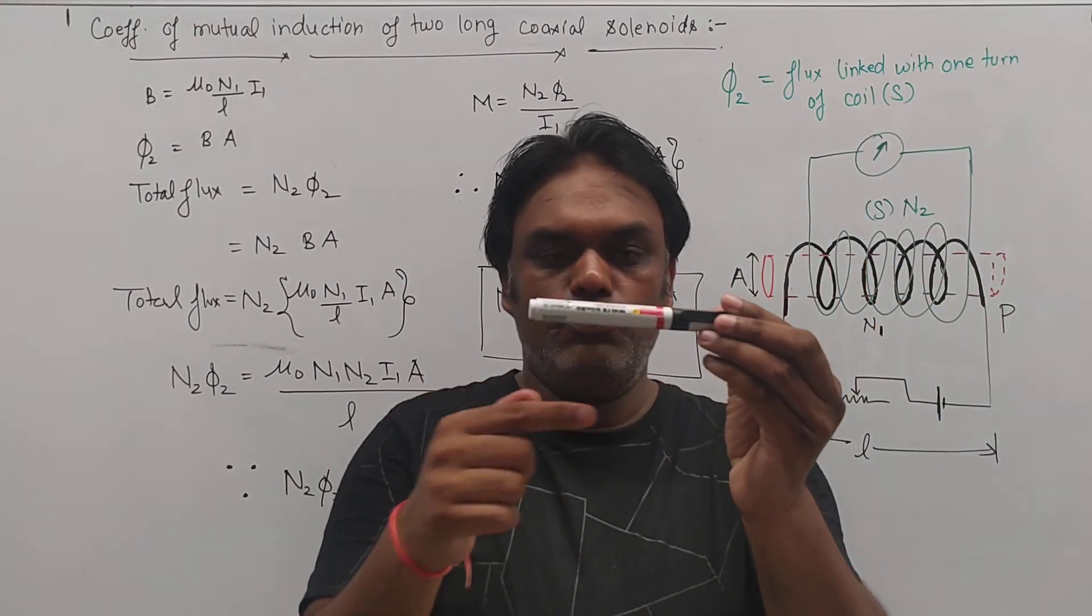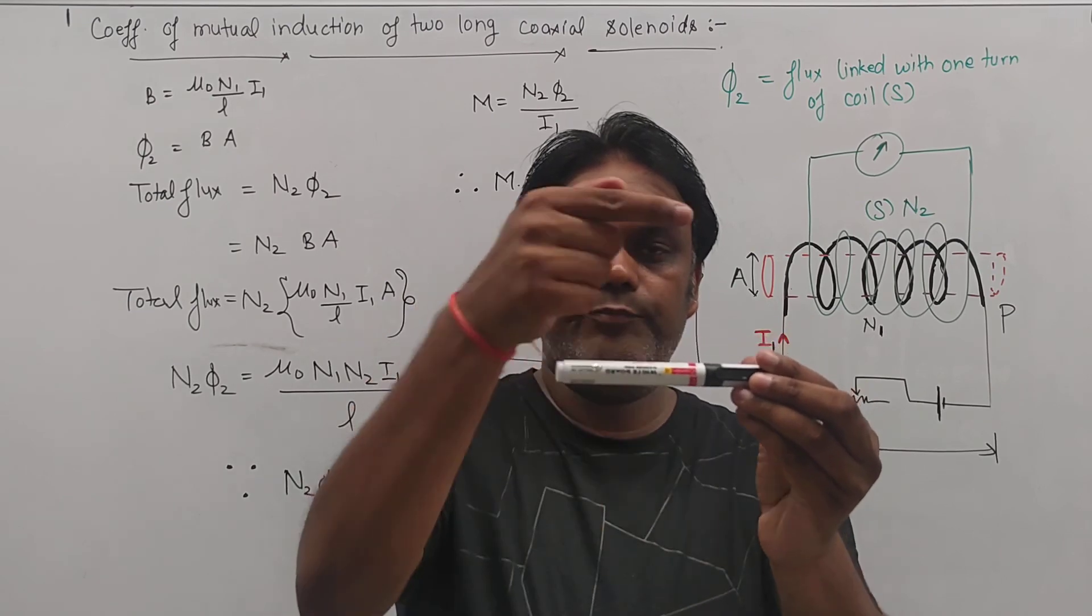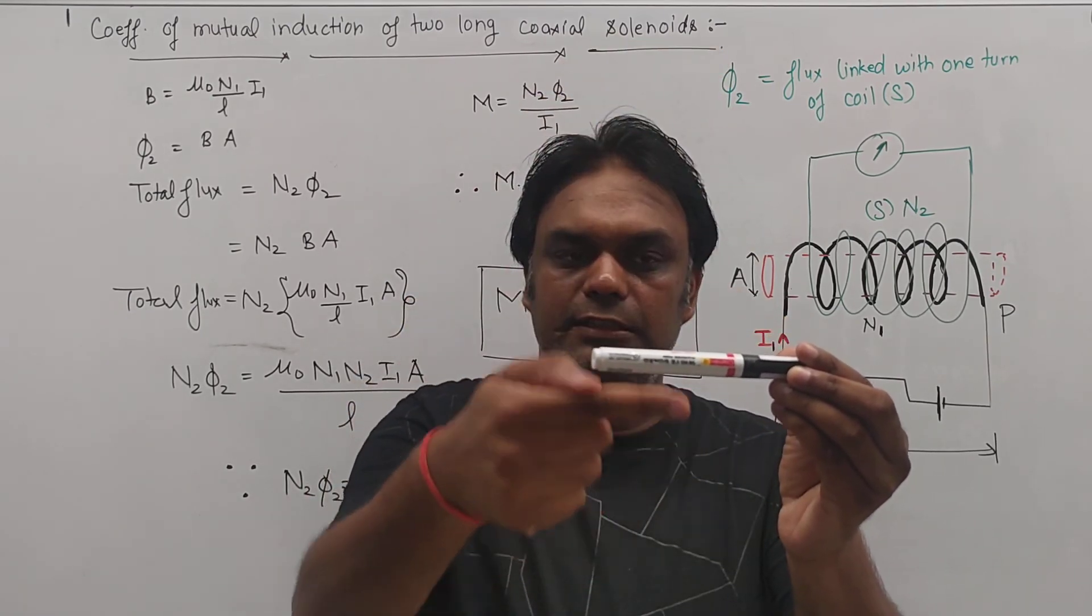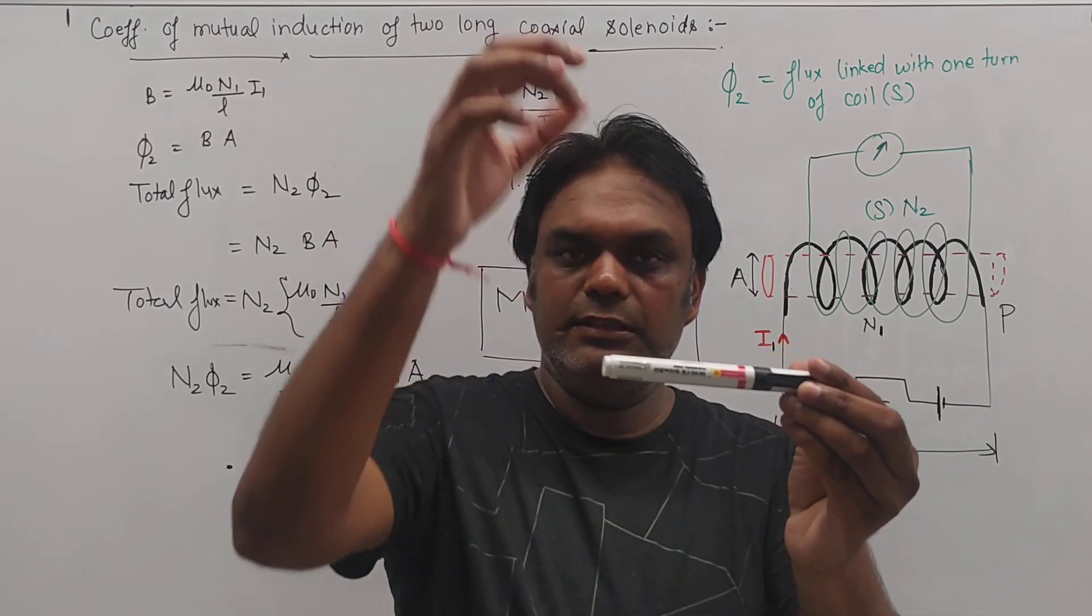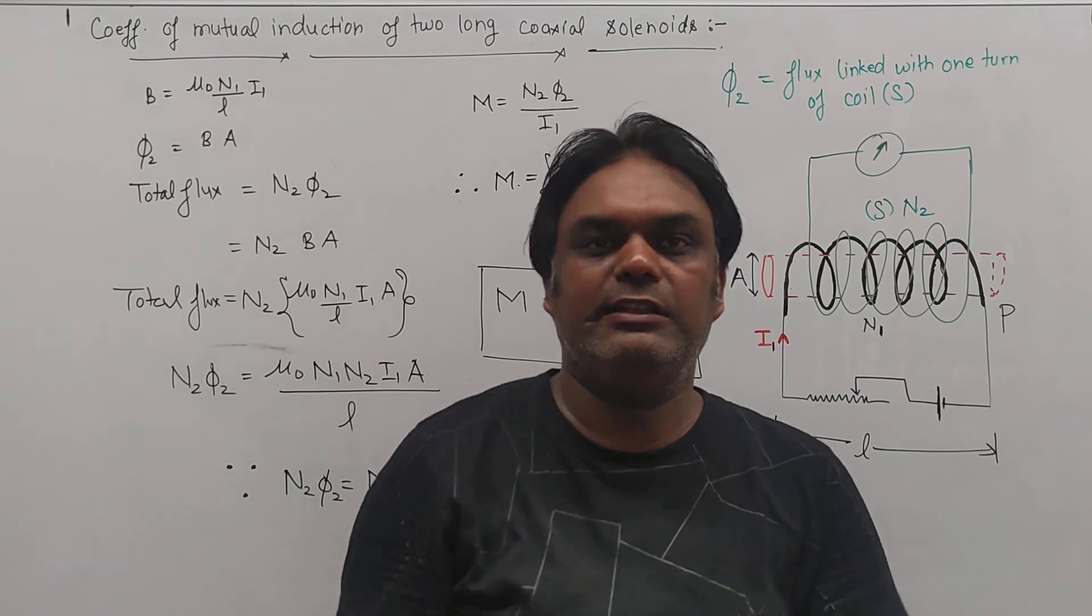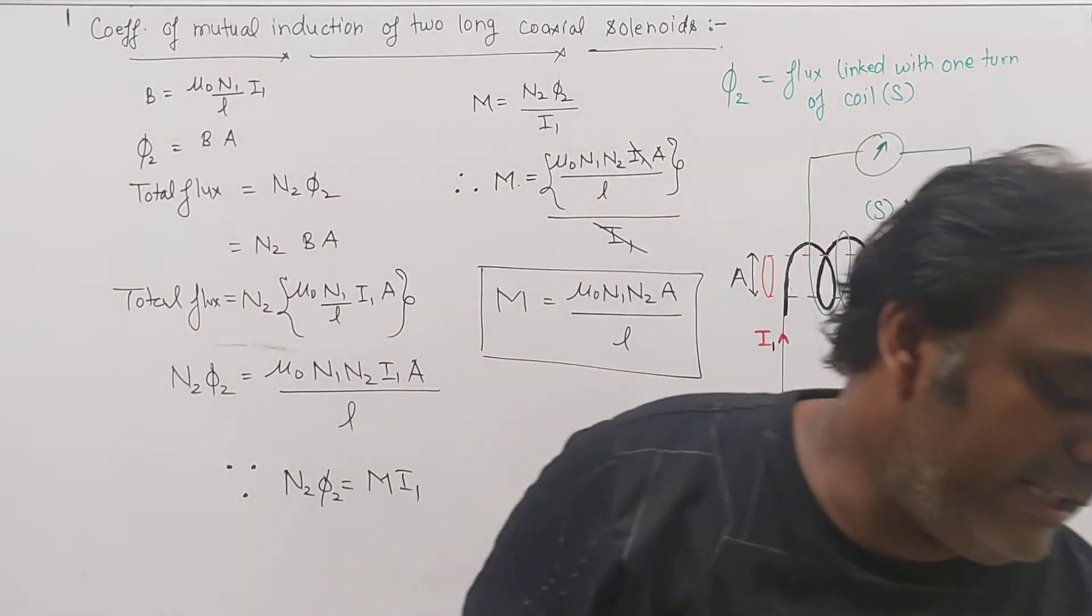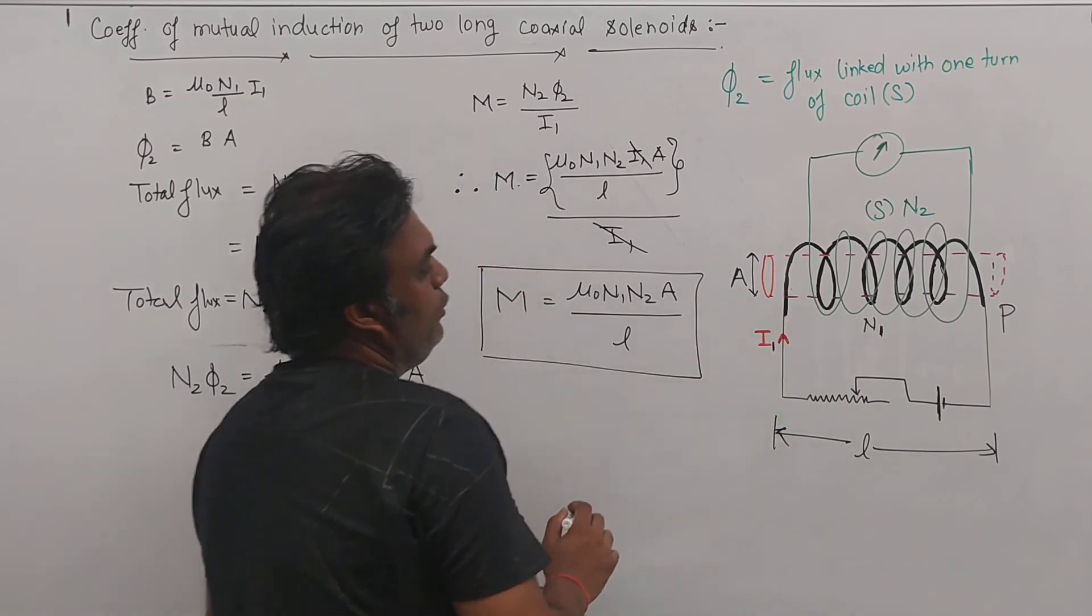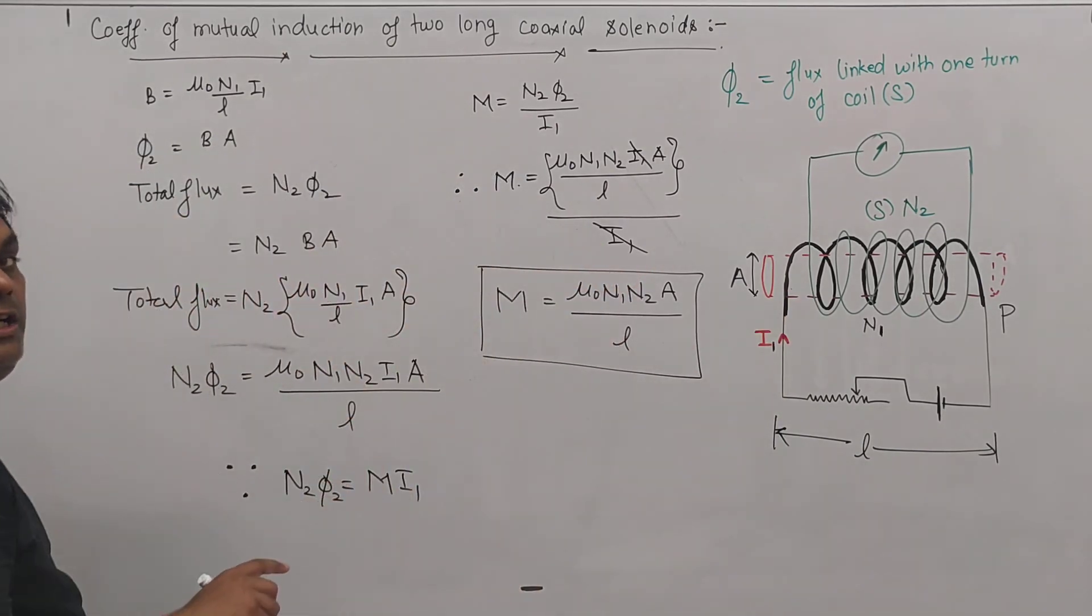Coaxial means, I hope you're understanding, if this is the core, then one wire is wound in this way and in this the EMF is attached. The other above this - in this two terminals are taken and a galvanometer is attached.